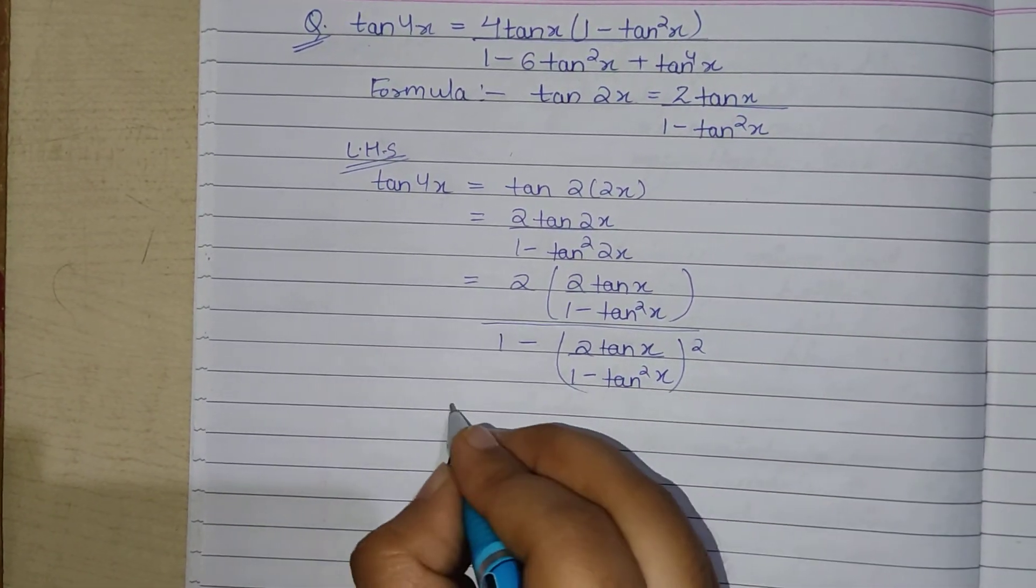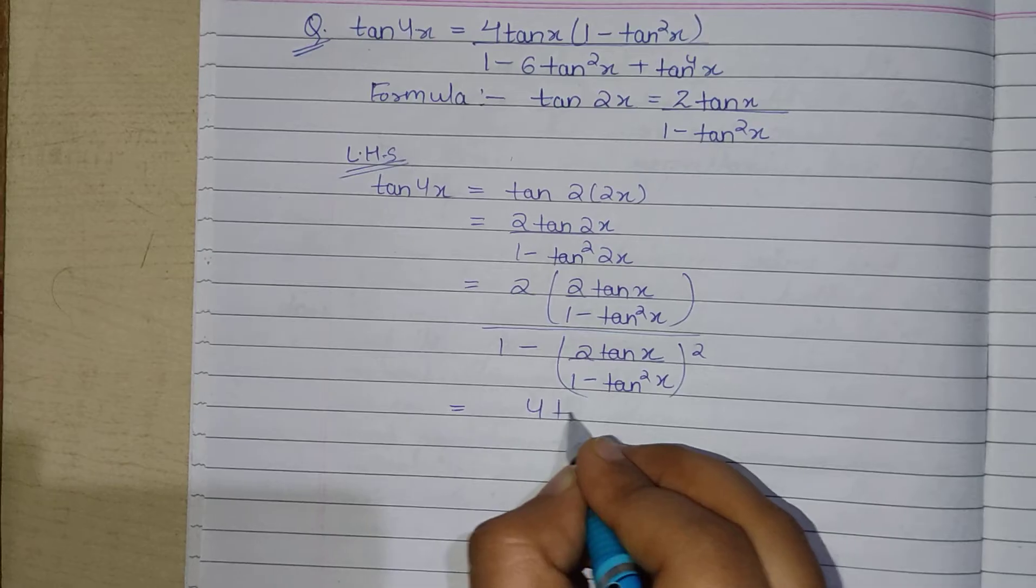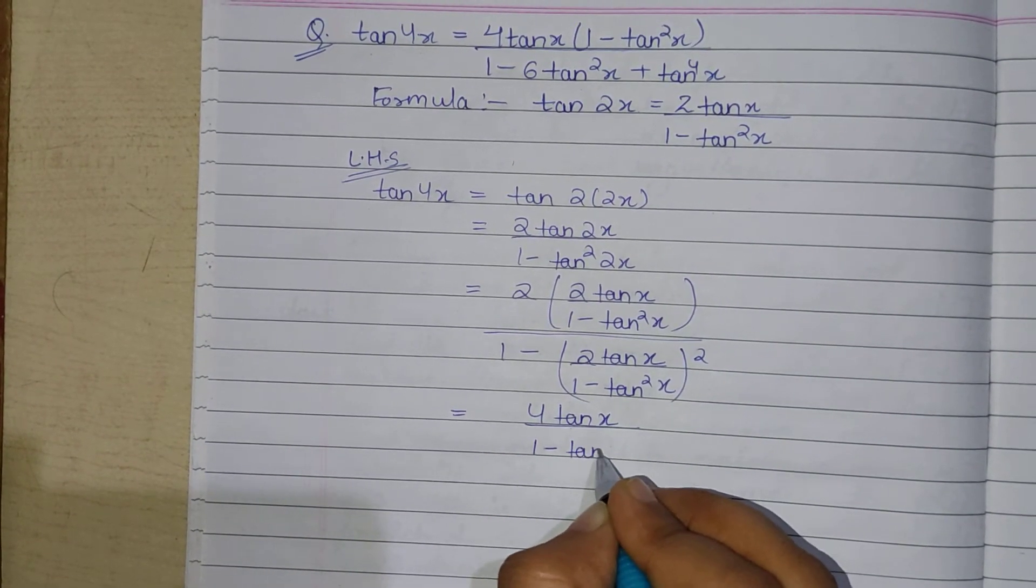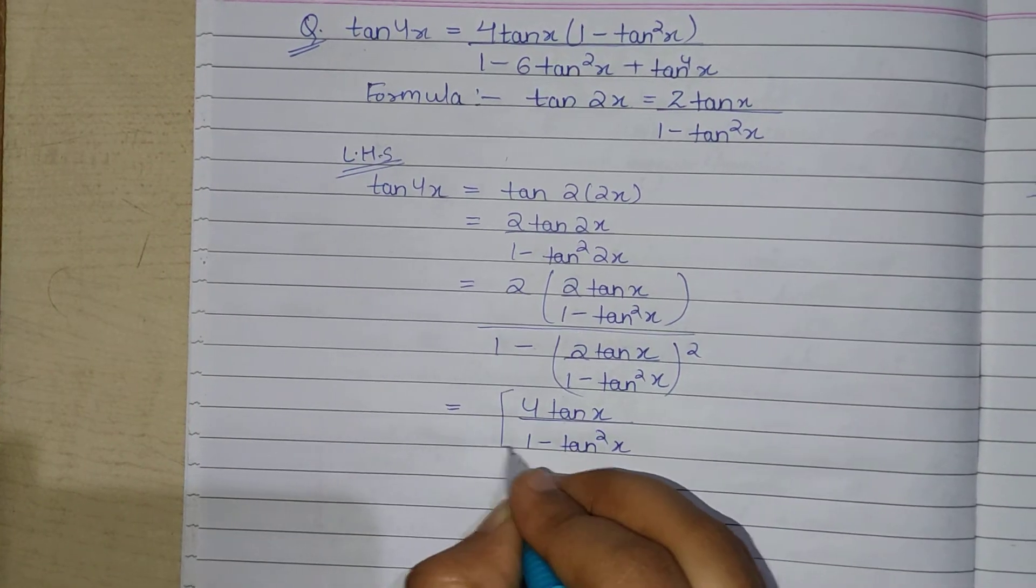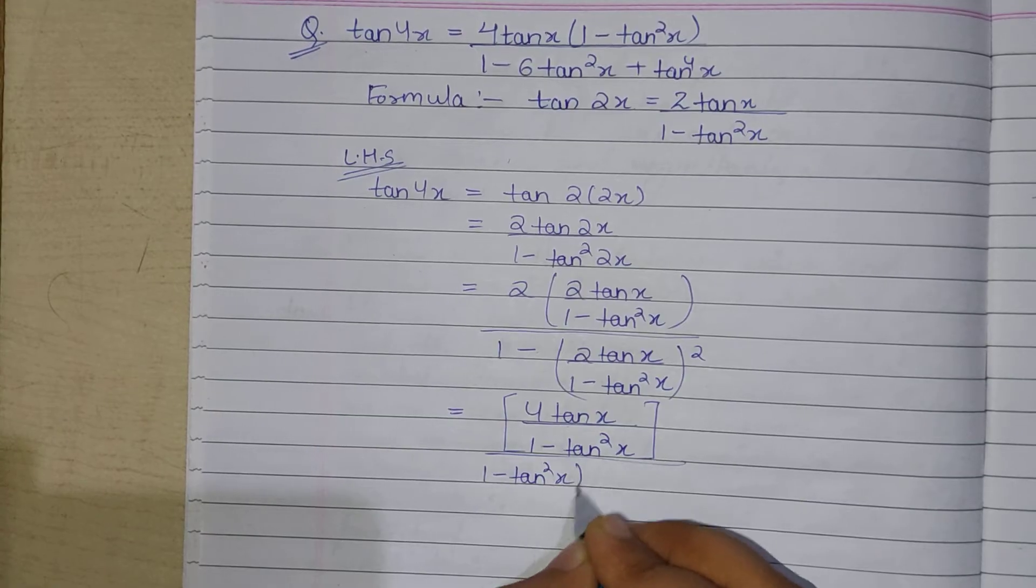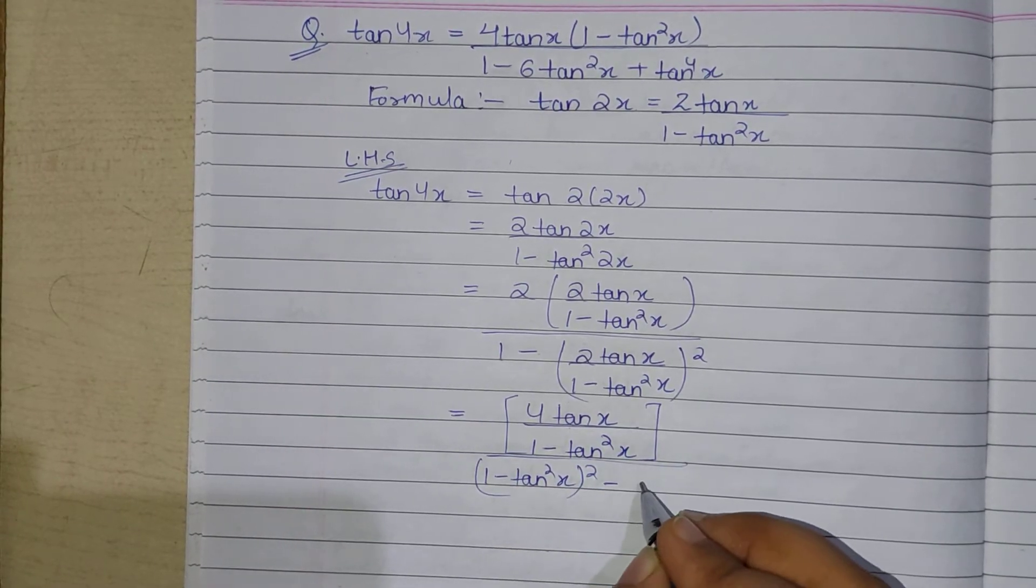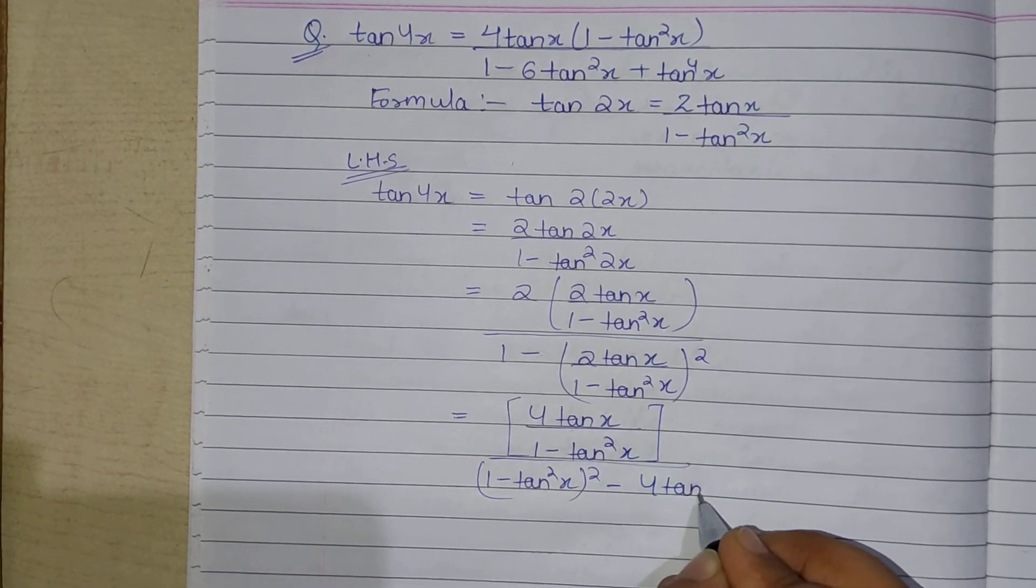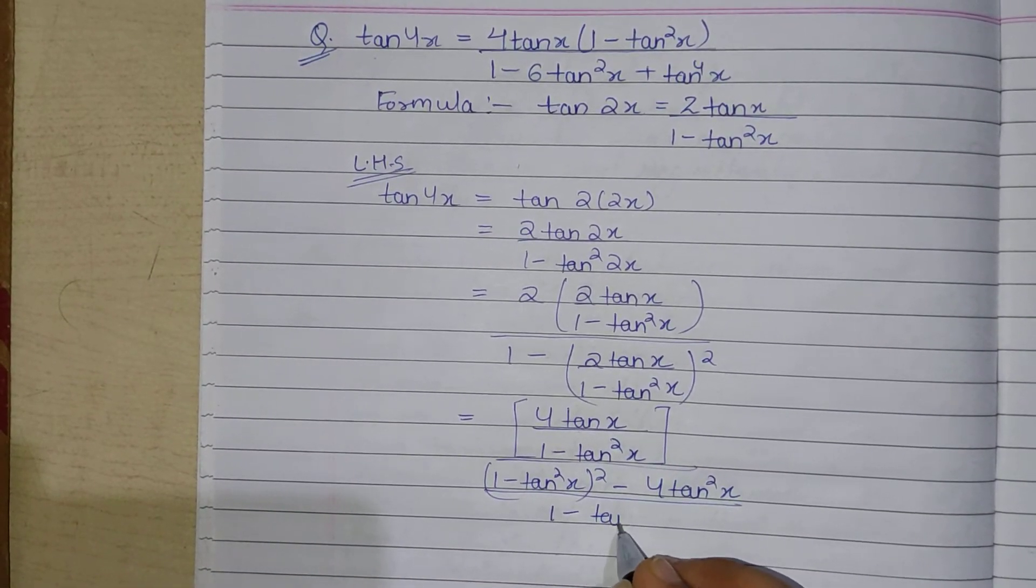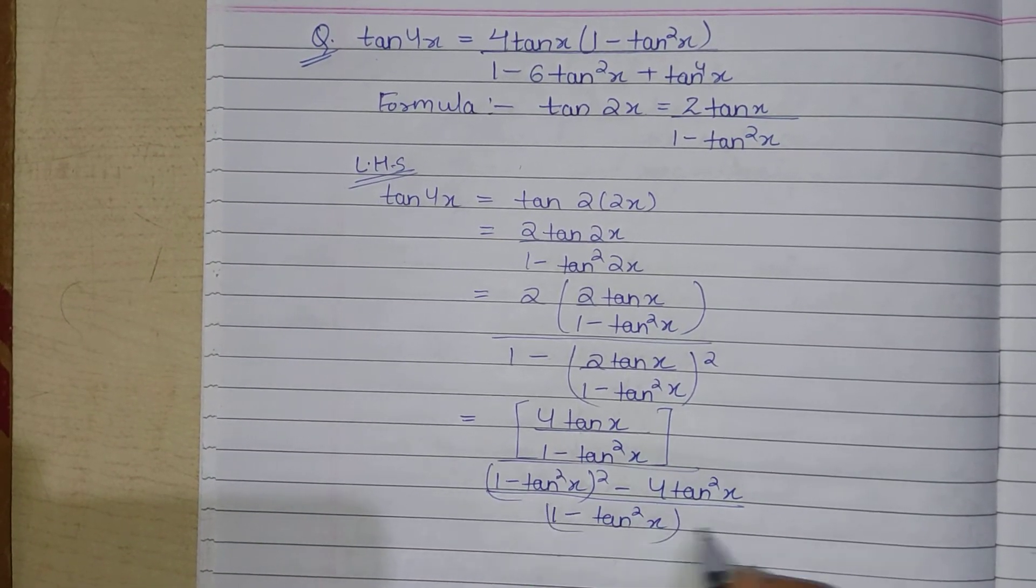This can be written like 4 tan x upon 1 minus tan square x whole, divided by 1 minus tan square x whole square minus 4 tan square x upon 1 minus tan square x whole square.